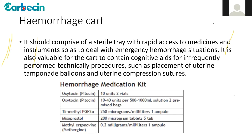The readiness domain includes five areas of focus to prevent delays and prepare for optimal management of obstetric hemorrhage. It aims to improve interdepartmental coordination and should comprise a sterile tray with rapid access to medicines and instruments. The cart should contain cognitive aids for infrequently performed technical procedures such as placement of uterine tamponade balloon and compression sutures.